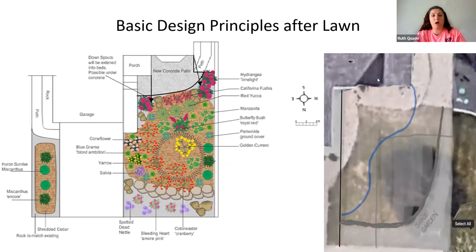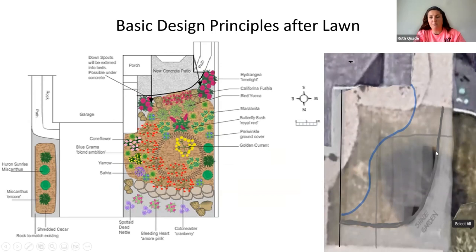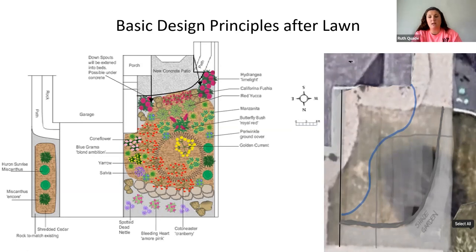When a client comes to me and says they want to do a design using Life After Lawn, this is where we start. We come to an agreement about the layout — we're going to take out all of this lawn, and this is the shape we're going to go for, including a rain garden. Whenever you're starting to design, it's really great to use Google Earth or something like that to get an image and measurements and start seeing what works best for your lawn.